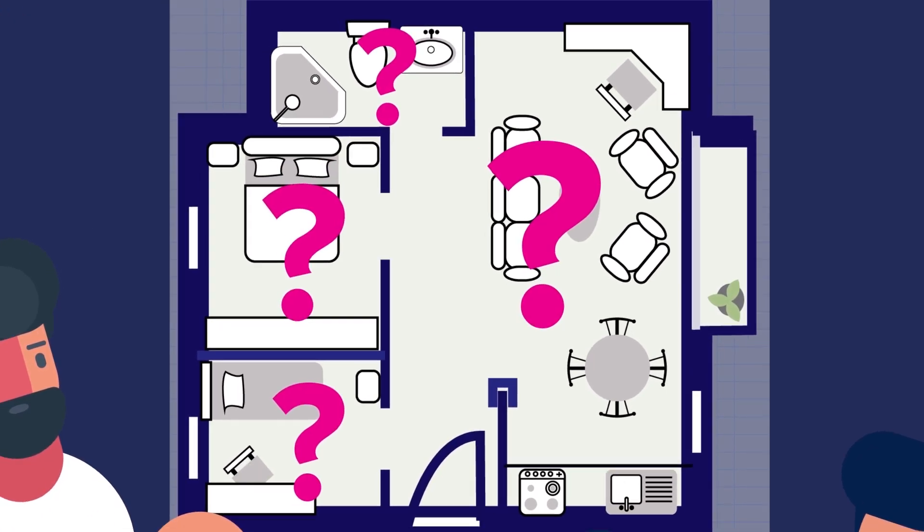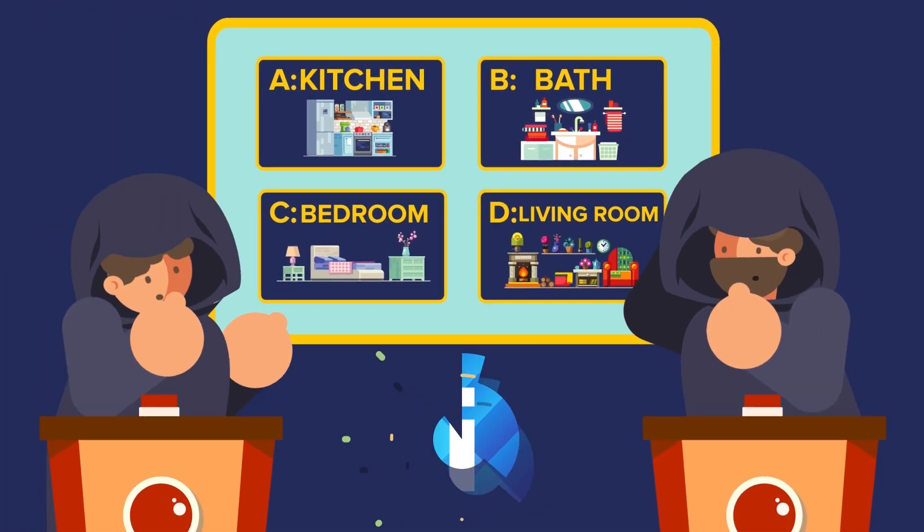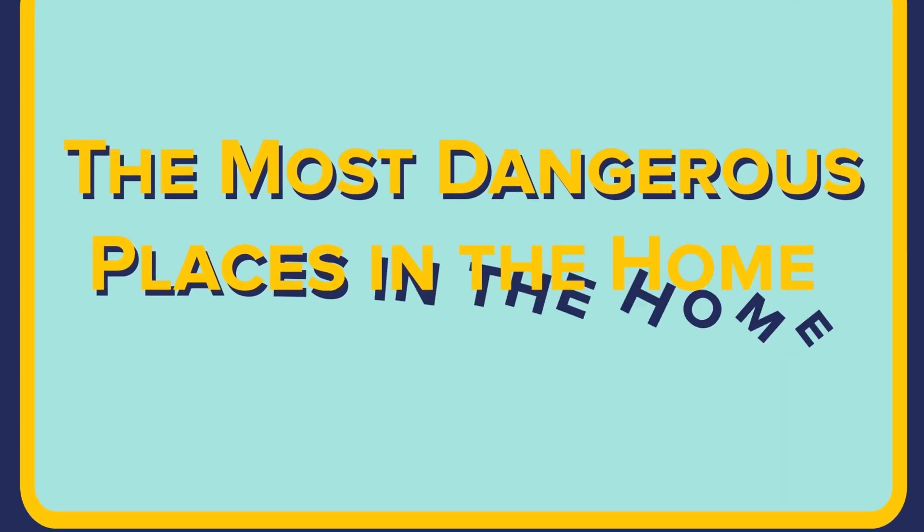Studies by the NSA show that while accidents can happen in all of our rooms, one room is potentially more deadly than all of the others. Can you guess which room that is? That's what we'll find out today in this episode of the Infographics Show, The Most Dangerous Places in the Home.